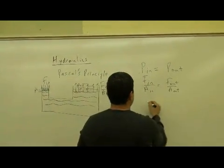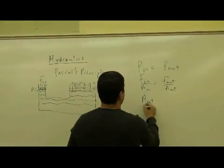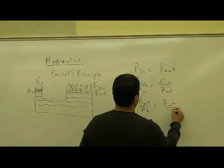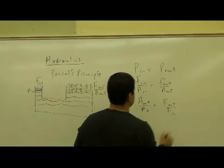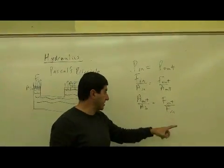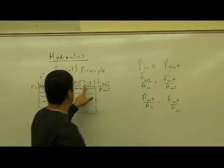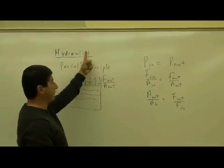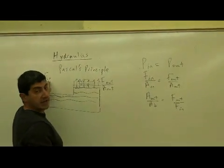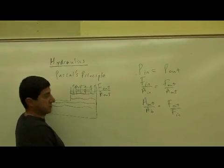If I cross multiply, I get A out over A in is equal to F out over F in. Now, of course, for usual purposes, we want to be able to have a bigger force here. We want to be able to lift a heavy object by exerting a small amount of force.